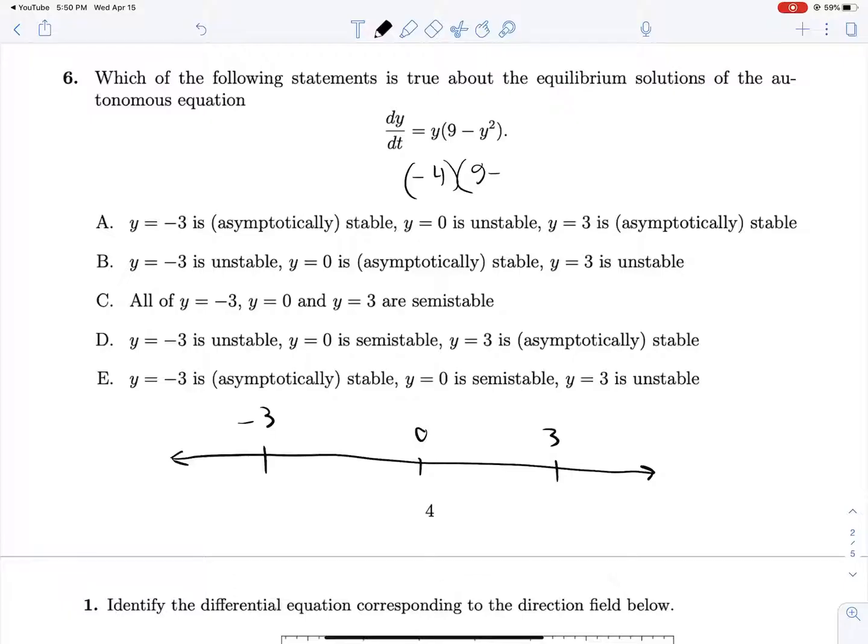If we plug in y equals negative 4, we will have negative 4 times y minus, oh sorry, 9 minus 16. That will be a negative times a negative, so we will get an arrow, a second arrow pointing in the positive direction. And just to be clear, I'm going to remove the arrows from our number line. That might help visualize things a little bit.